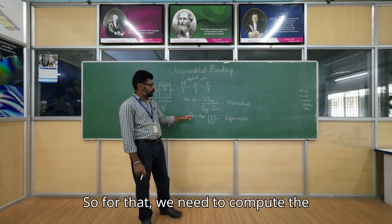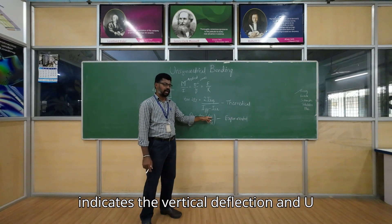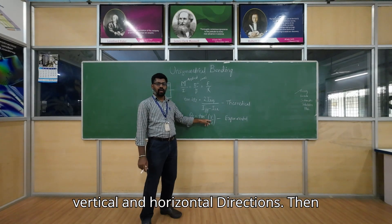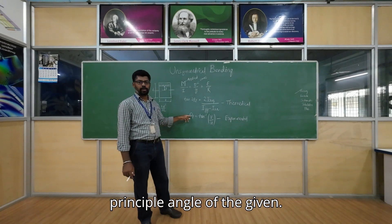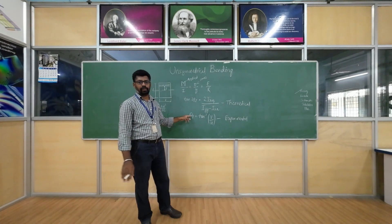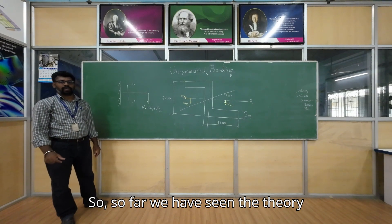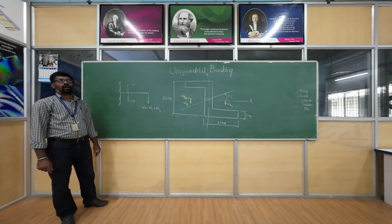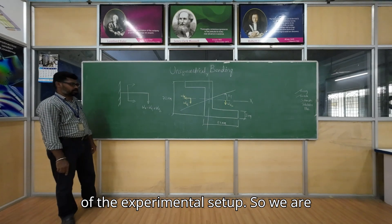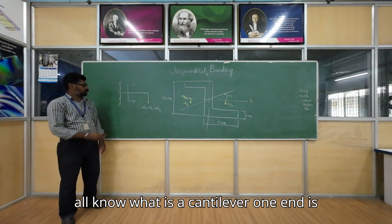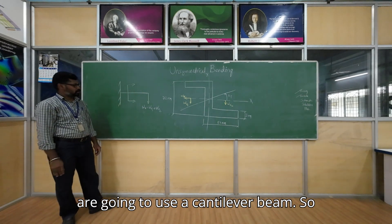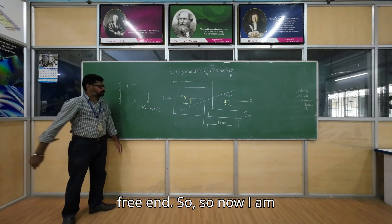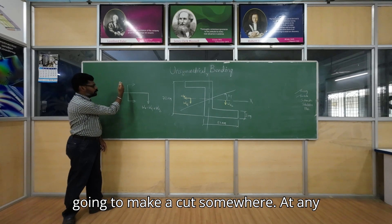To compute the principal axis experimentally, we need to measure both vertical deflection V and horizontal deflection U. Once we know the deflections in both directions, it is possible to compute the principal angle of the given cross section. We will use a cantilever beam — one end fixed, the other end free — and the load will be applied at the free end.